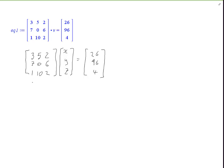So, multiply it, you get 3 times x, plus 5 times y, plus 2 times z, so you're going to get 3x plus 5y plus 2z.